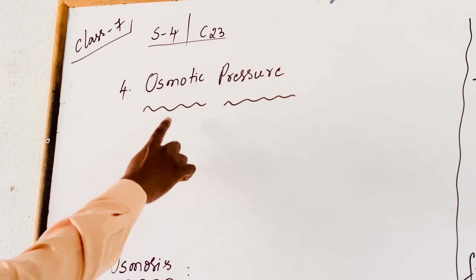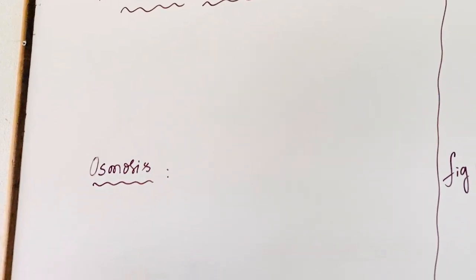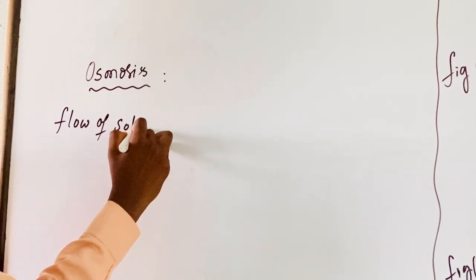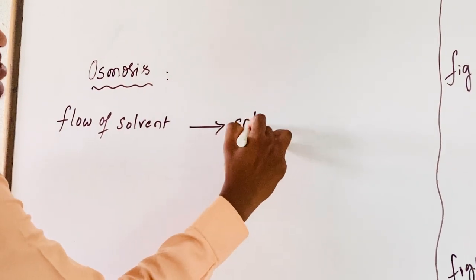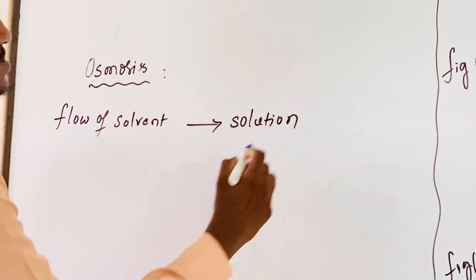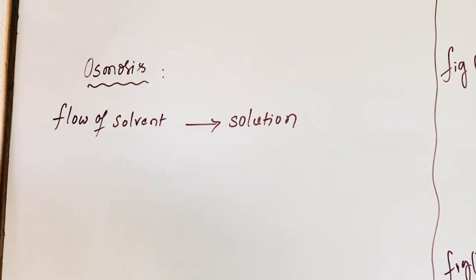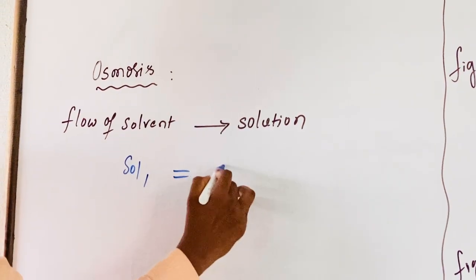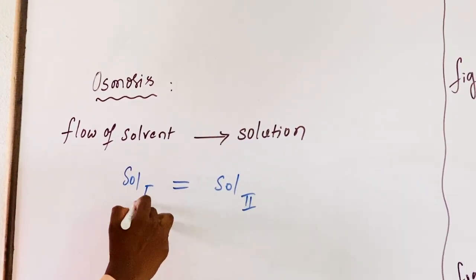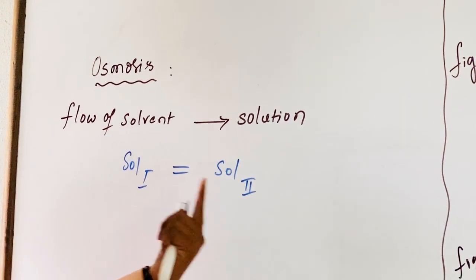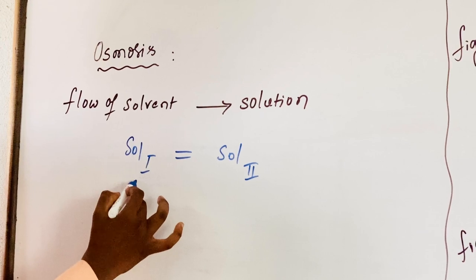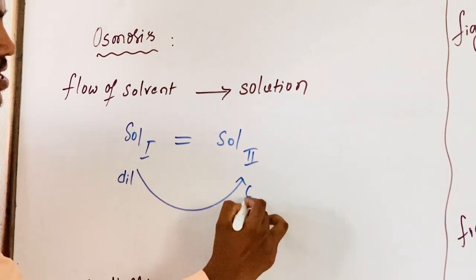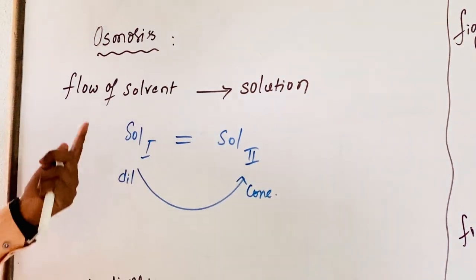Before entering into Osmotic Pressure, we have to know the definition of Osmosis. Osmosis is nothing but the flow of solvent molecules into the solution. When two solutions containing the same non-volatile solute at different concentrations are connected, the flow of solvent from the dilute solution to the concentrated solution is known as Osmosis.